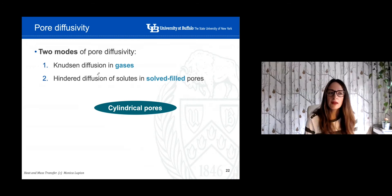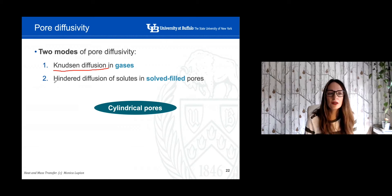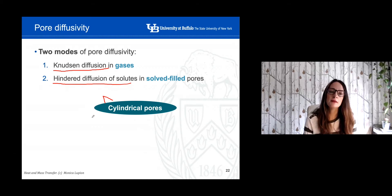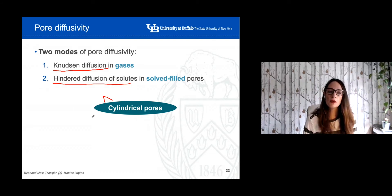We're going to assume that there are two different modes of pore diffusivity. One is called Knudsen diffusion in gases, and the second mode is when we have liquid solvents — the hindered diffusion of solutes in pores filled with a liquid solvent. We're going to consider cylindrical pores, although I will explain what we can do when the pores are not cylindrical.